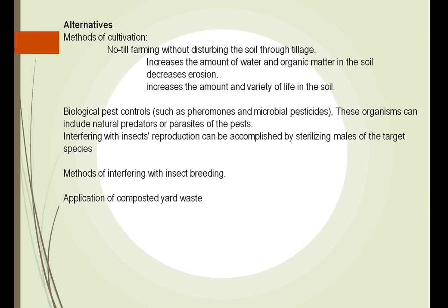We can use biological pest controls such as pheromones and microbial pesticides. The boll weevil, until recently, has decimated cotton crops. We have now learned that although it's hard to kill the boll weevil directly, we can use a pheromone to attract it to a small portion of the cotton crop and then use strong methods to kill it off.